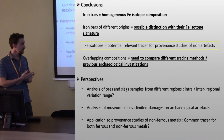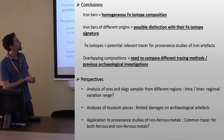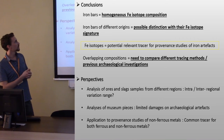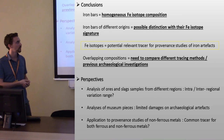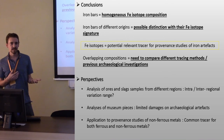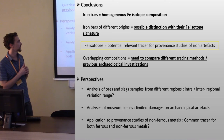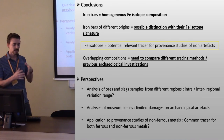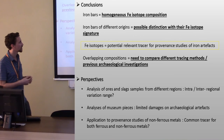In conclusion, iron bars have a homogeneous iron isotopic composition, and bars from different origins may be distinguished with their iron isotopic signature. Iron isotopes may provide a potentially relevant tracer for provenance studies. However, we need to compare different tracing methods because of possible overlapping compositions, and this shows the importance of prior archaeological investigations in order to well constrain the archaeological context.